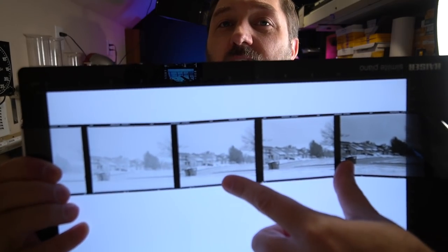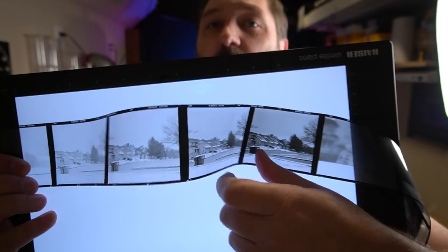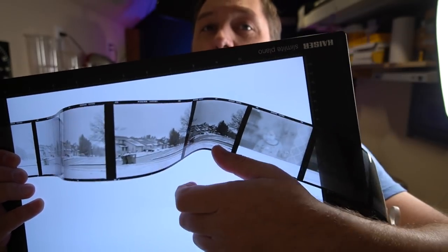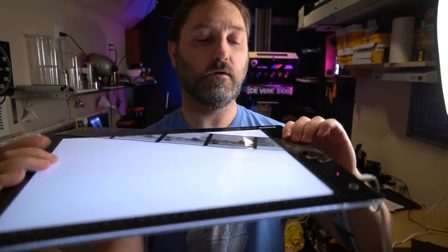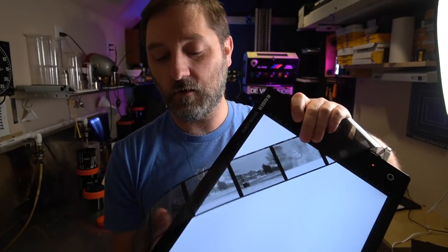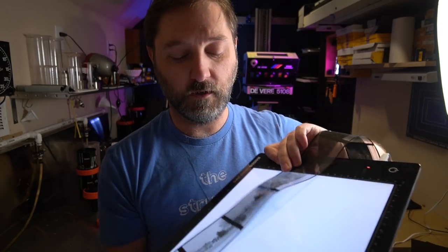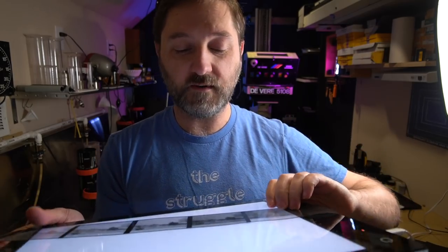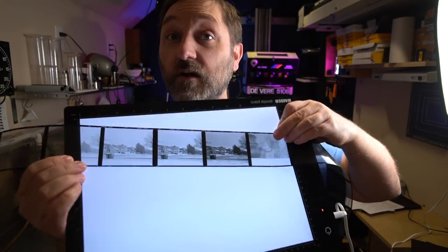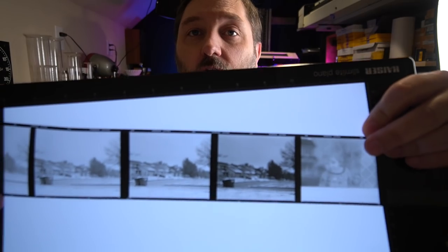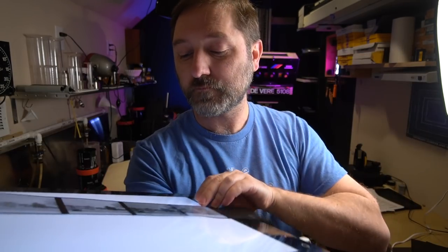So one stop or two stops over, one stop over box speed here. Get this closer for you. Box speed here, one stop underexposed, two stops underexposed. And while it may be difficult to tell here on the light box and the video camera, the one stop and two stop underexposed start to look the best. These are all the 12 minute development time on the first developer step.